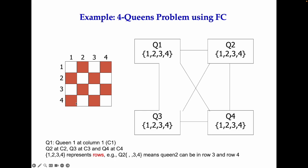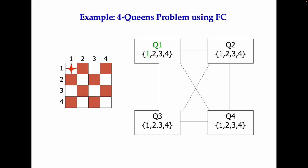Now let's start doing it with forward checking. In forward checking, we always check all the direct neighbors as soon as we assign a value. For instance, you assign row 1 to Q1. Now what would happen is that assignment affects queen 2, 3, and 4 in some way. So which options are removed from queen 2?